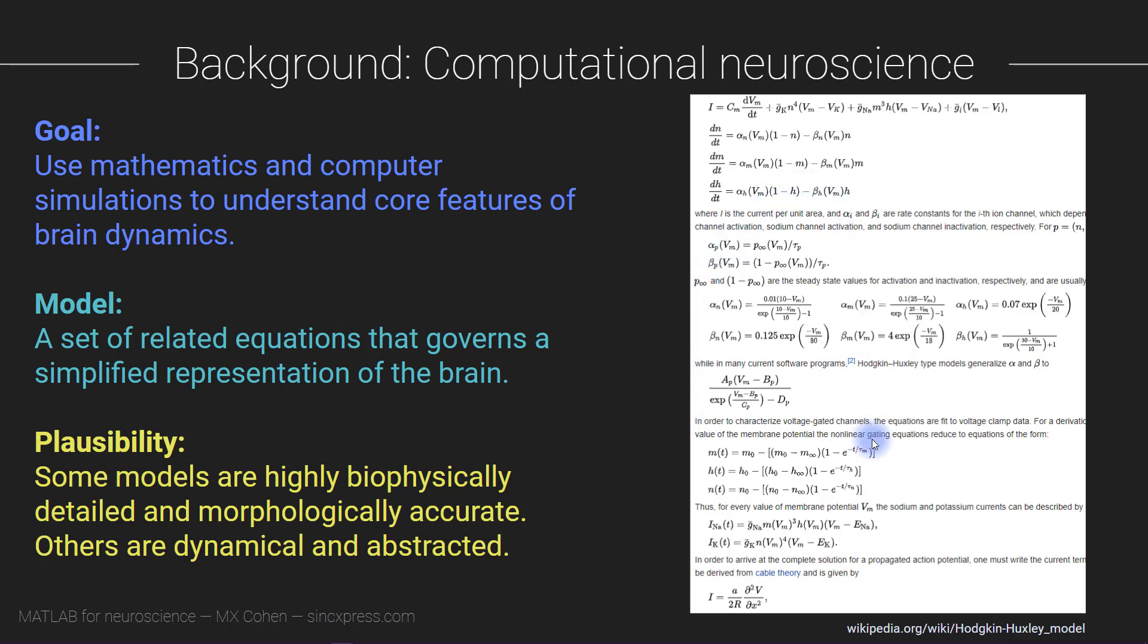This set of equations, this model is called the Hodgkin-Huxley model. You can see it's spelled down here in the URL. Hodgkin and Huxley developed this model in the 1940s and they got the Nobel Prize for this work in physiology in somewhere in the 1960s. I forget the exact year. Okay. So this is just an example. I wanted to show these equations just to give you a bit of a sense of what one model looks like. This is one of the most influential and important models in all of computational neuroscience.